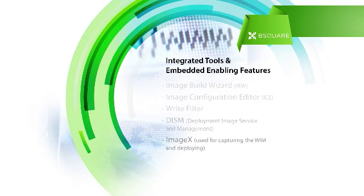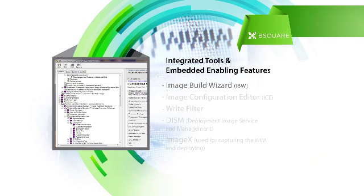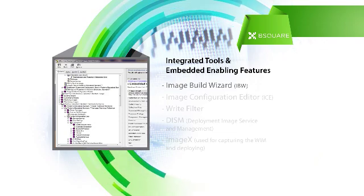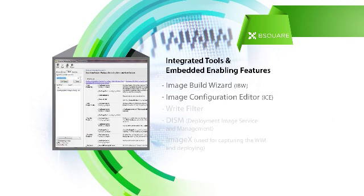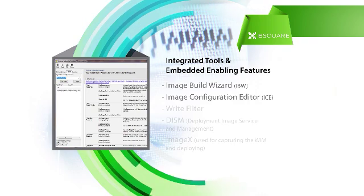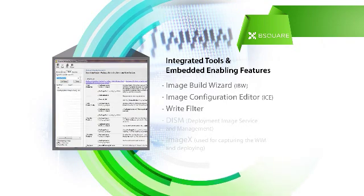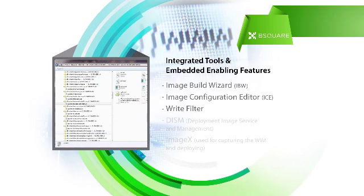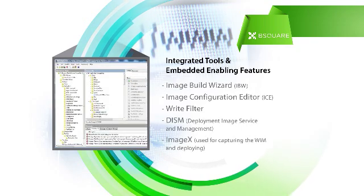Integrated Tools and Embedded Enabling Features – Some of these include the Image Build Wizard, or IBW, for quick prototyping and iterative image development. The Image Configuration Editor, or ICE, is an advanced interface that can be used to make granular configurations on the image before deployment. There are also a number of embedded features like write filter technologies, along with custom branding to customize the image with ease and bring devices to market faster.